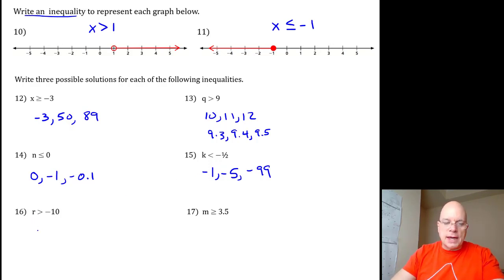16, r is greater than negative 10. Negative 5, 0, 1 million, anything to the right of negative 10 on a number line. Negative 10 should not be included as a possible solution.